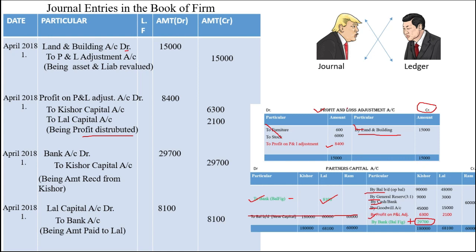So, in total we have around 8 to 9 journal entries to pass. Finally they say tally the balance sheet, so of course you have to open all these ledger items. I hope you understood. If you have any problems, please write in the comment box and write your suggestions — I will try to solve your doubts. Thank you so much.